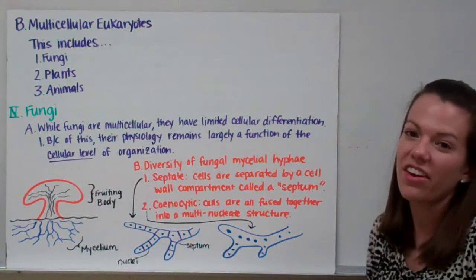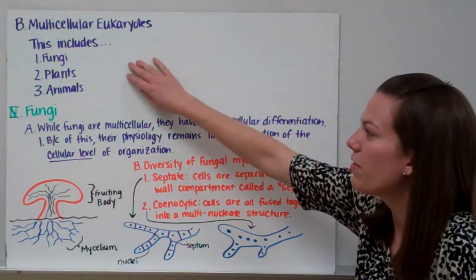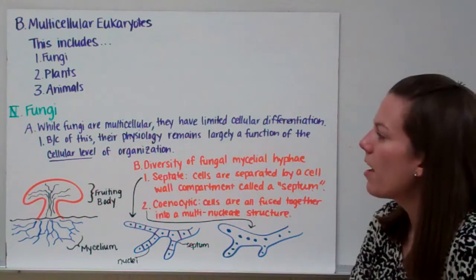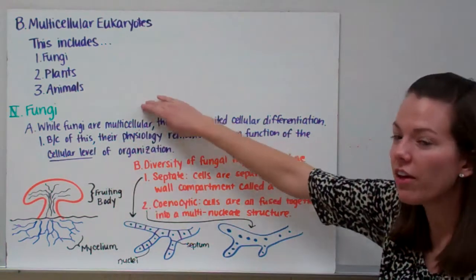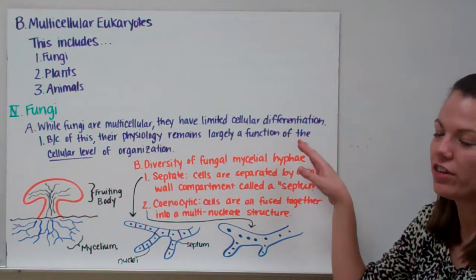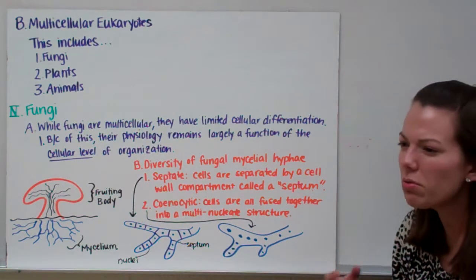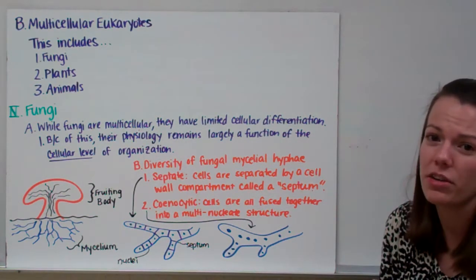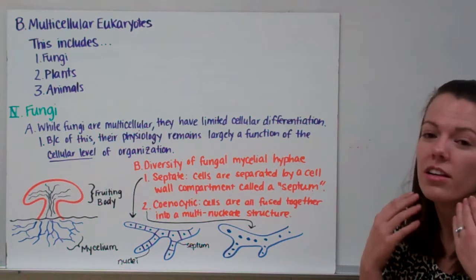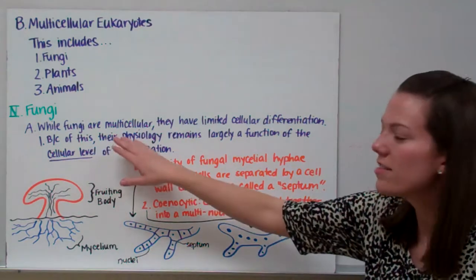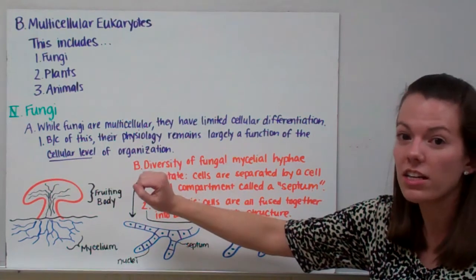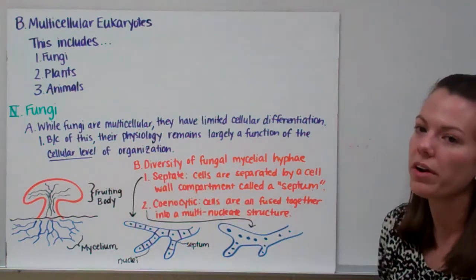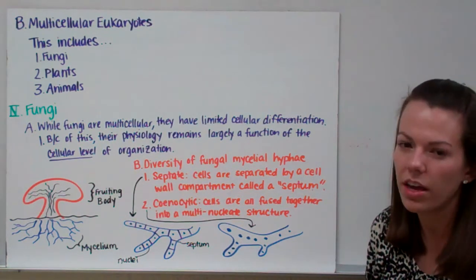Multicellular eukaryotes include fungi, plants, and animals — there are no multicellular protists. Fungi are multicellular but have limited cell differentiation; their cells don't carry out very different functions, unlike a human whose brain cells differ greatly from eye, skin, or lung cells. Because fungal cells are not specialized, their physiology remains largely a function of the cellular level of organization.